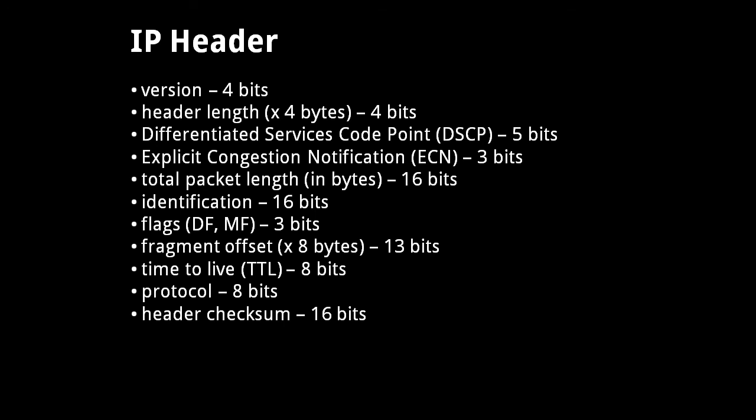Next we have the header checksum. A checksum is a technique for error checking. The variant used in an IP header takes the one's complement of the sum of all the 16-bit chunks of the header, not including the checksum field itself. This is computed by the packet's original sender to set the checksum field, and then each router or host receiving the packet performs the same computation and checks the result against the received checksum field. If the two values do not match, the header data must have been corrupted, and the packet is discarded. If they do match, it's still possible the data was corrupted, but extremely unlikely because the checksum would have to be corrupted in just the right way to match the corrupted header.